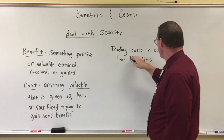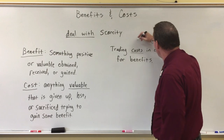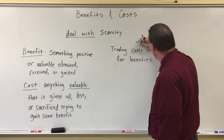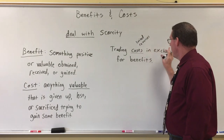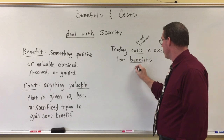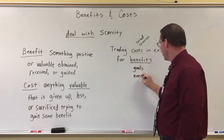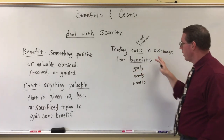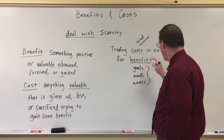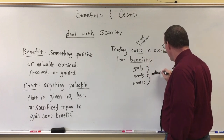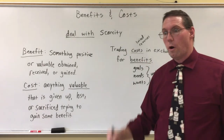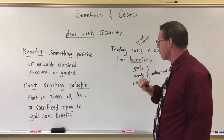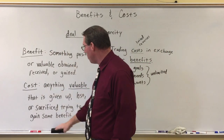The costs that you are giving up — the valuable things you are giving up — are your limited resources. Remember when we talked about scarcity: your costs are the limited resources, and the benefits are the goals, needs, or wants. The benefits we want in life are unlimited. If you asked somebody how many benefits they want, they would say all of them and more, but we can only have so many benefits because every time we get a benefit, we have to give up a limited resource. So in order to get a benefit, you have to give up a cost.